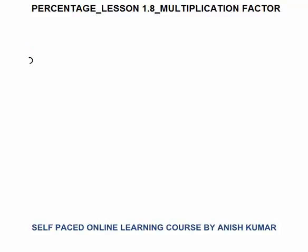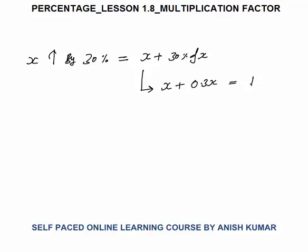For example, if I say that the number x is increased by 30%, it means x plus 30% of x. You can express this in two ways: one way is x plus 0.3x which becomes 1.3x, or in fraction form x plus 30/100 which is 3/10, so x plus 3/10 x becomes 13/10 x.